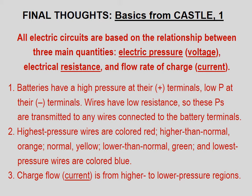All electric circuits are based on the relationship between three main quantities: electric pressure or voltage, electrical resistance, and the flow rate of charge, namely current. One: batteries have a high pressure at their positive terminals, low pressure at their negative terminals. Wires have low resistance, so these pressures are transmitted to any wires connected to the battery terminals. Two: highest pressure wires are colored red; higher than normal, orange; normal, yellow; lower than normal, green; and lowest pressure wires are colored blue. And three: charge flow, or current, is from higher to lower pressure regions.